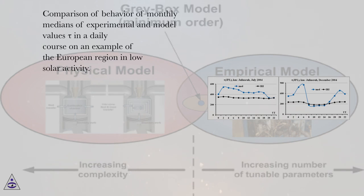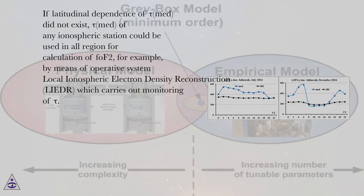Comparison of behavior of monthly medians of experimental and model values tau in a daily course on an example of the European region in low solar activity. If latitudinal dependence of tau MED did not exist, tau MED of any ionospheric station could be used in all region for calculation of FOF2, for example, by means of operative system local ionospheric electron density reconstruction LEADER, which carries out monitoring of tau.